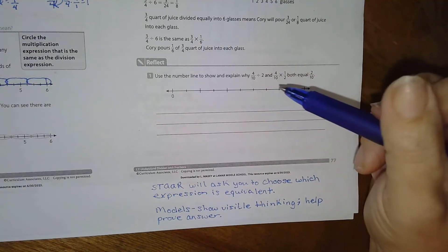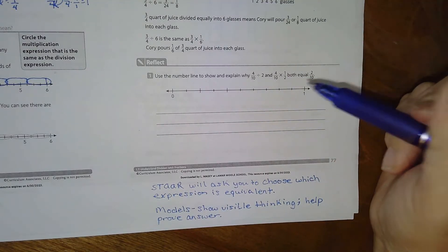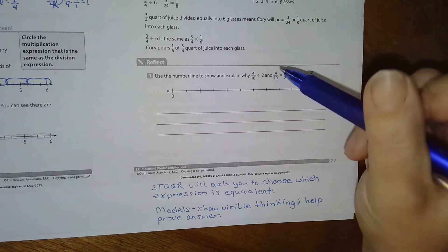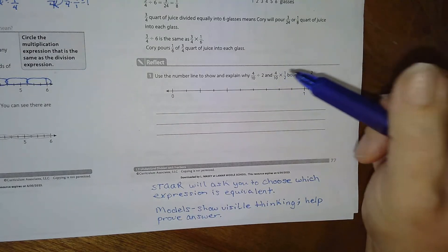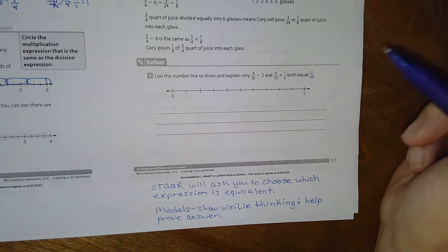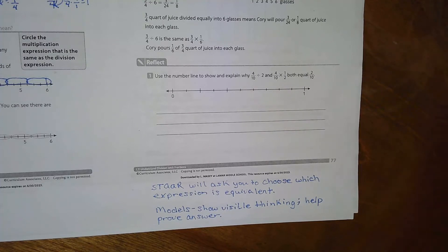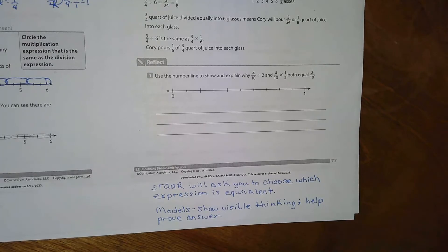So we're going to use the number line to show and explain why four-tenths divided by two and four-tenths times one-half both equal two-tenths.